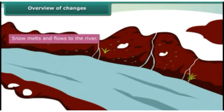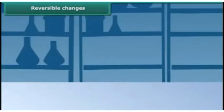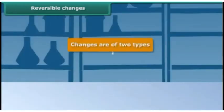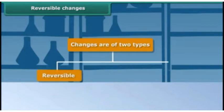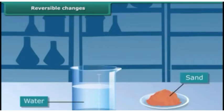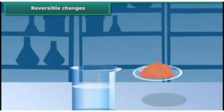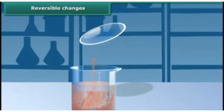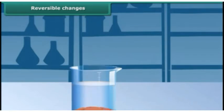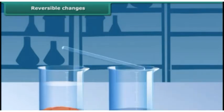Changes are of two types: reversible and irreversible. Changes that can be reverted to their original state are reversible changes. Let's try this — take some sand and mix it in water. Would you be able to remove the sand from the water after they are mixed together?